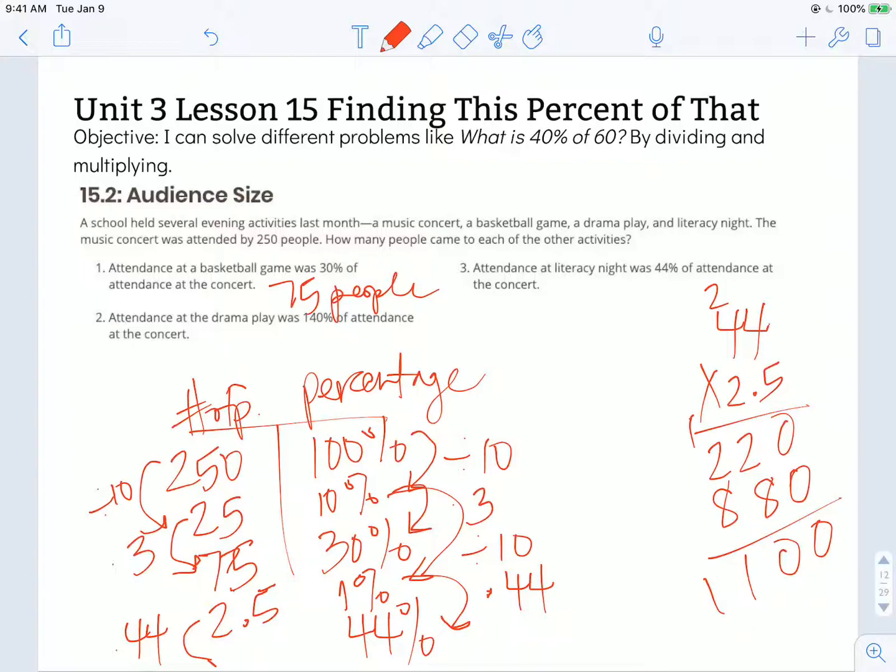So it looks like there were 1,100 people at the literacy night, but that doesn't make sense because there were 250 people at the concert, and there were fewer people at the literacy night. So one thing that I forgot is my decimal. I need to account for the place value of my numbers. So if I look at this as 50 times 2, the answer should be about 100. So I can confirm that my decimal should go there. So there were 110 people at the literacy night.